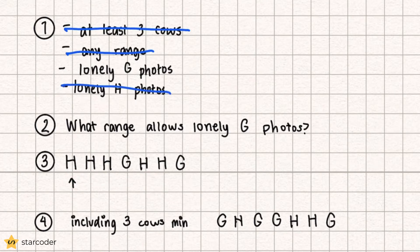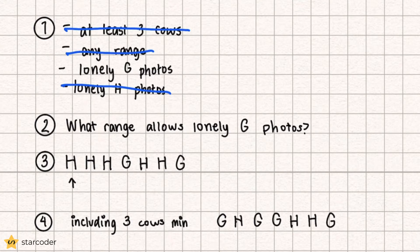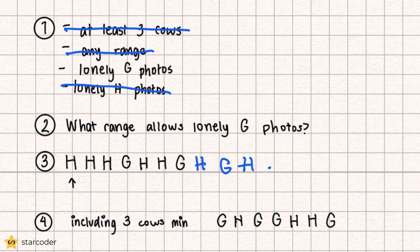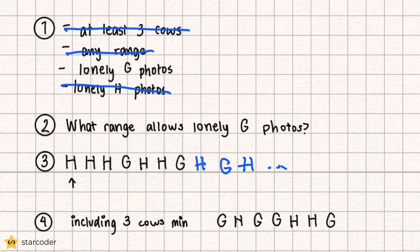We're also only going to consider throwing out photos for the G type. So our question simplifies to: starting at a certain point, what range of photos from this point should be removed because they contain one lonely cow of type G? Any photo removed because of a type G cow is going to contain exactly one G cow. So our range goes from the first G cow, starting from our starting point, all the way up until the second G cow — since any photo extending beyond that already contains two G cows, making it no longer a lonely photo.